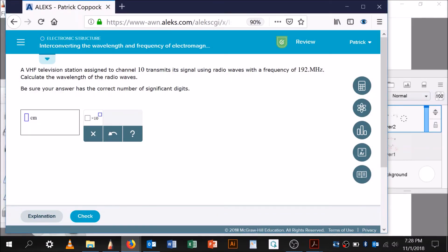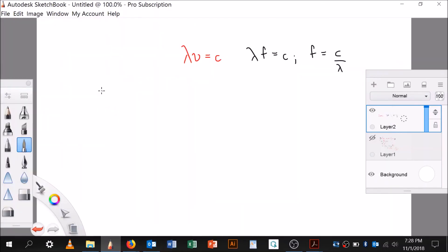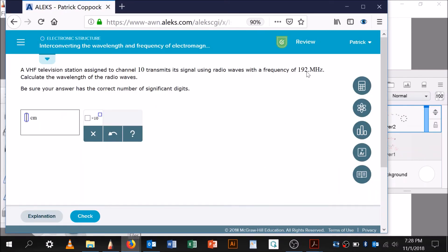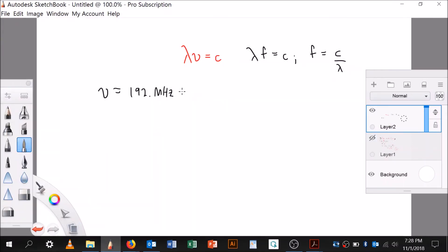We're going back over here. Here, a VHF television station assigned to channel 10 transmits a signal using radio waves with a frequency of 192 megahertz. So frequency is 192 megahertz. I'm going to rewrite this immediately. And that's 192 times 10 to the 6 hertz, which is the same thing as 192 times 10 to the 6 reciprocal seconds. And I know C because I just looked it up. It's 2.9979 times 10 to the 8th meters per second.